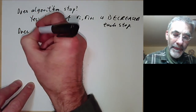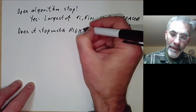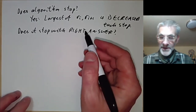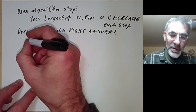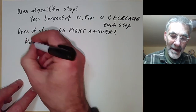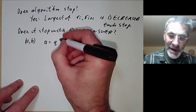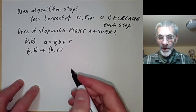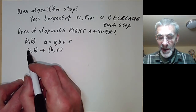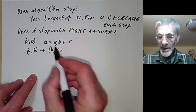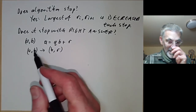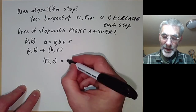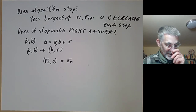Does it stop with the right answer? At each step we take a and b, write a = qb + r, and replace (a, b) with (b, r). The key observation is that GCD(a, b) = GCD(b, r) whenever a = qb + r. So at each step you're not changing the greatest common divisor, and you eventually end up with rₙ and 0, and GCD(rₙ, 0) = rₙ. So it's easy to check that it does stop with the right answer.